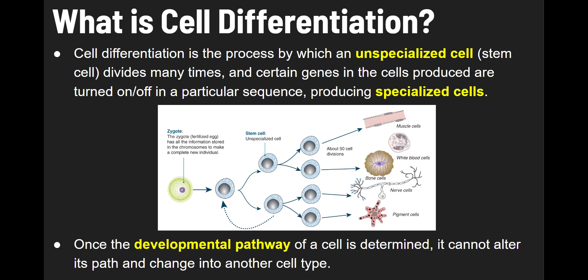Once the developmental pathway of a cell is determined, it can't alter its path and change into another cell type. So it's not like a cell that led to a pigment cell can suddenly take a totally different path and become a bone cell or a white blood cell.